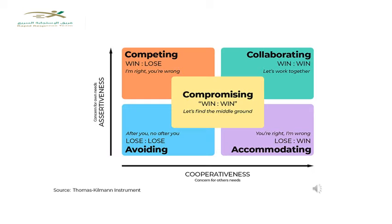The Thomas-Kilmann instrument has five modes. On the vertical axis, going upward means you are more concerned about your own needs and being more assertive, while going toward the right on the horizontal axis means you are more focused on others' needs and being more cooperative.